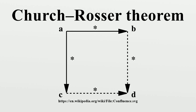In mathematics and theoretical computer science, the Church-Rosser theorem states that when applying reduction rules to terms in the lambda calculus, the ordering in which the reductions are chosen does not make a difference to the eventual result. More precisely, if there are two distinct reductions or sequences of reductions that can be applied to the same term, then there exists a term that is reachable from both results by applying sequences of additional reductions.